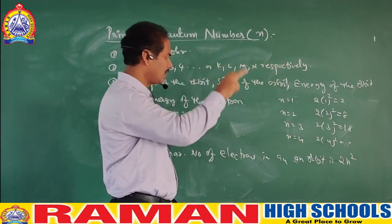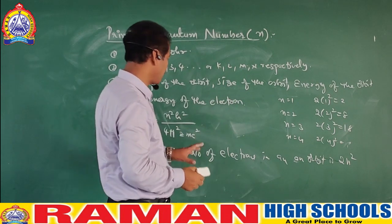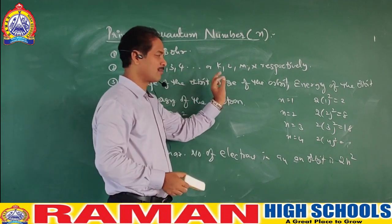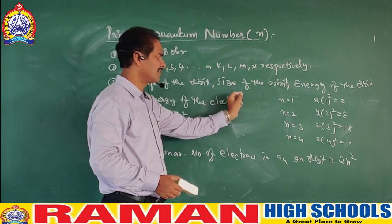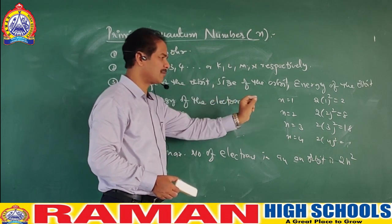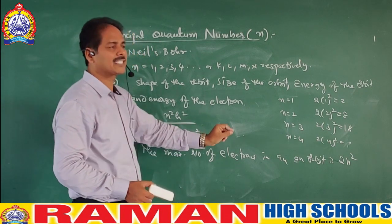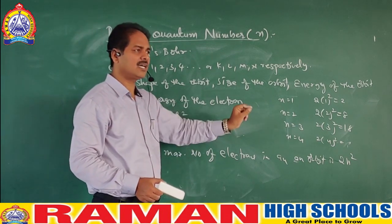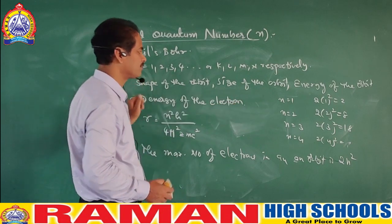So finally, the principal quantum number gives the shape of the orbit, size of the orbit, energy of the orbit, energy of the electron, and the maximum number of electrons present in the orbit given by the formula 2N².